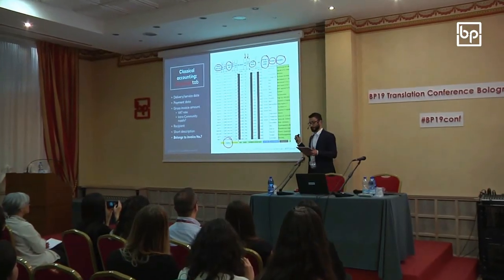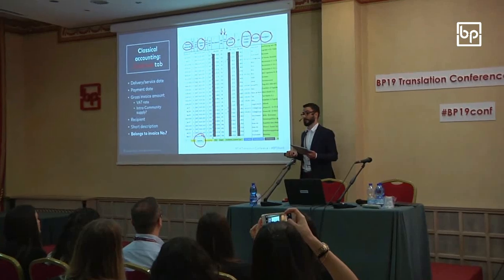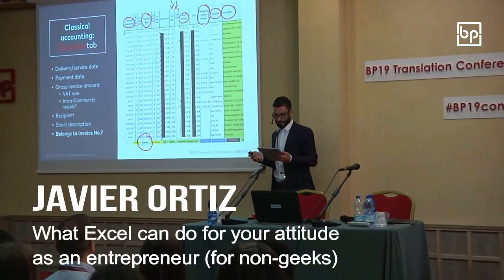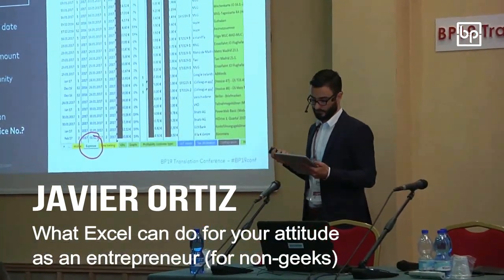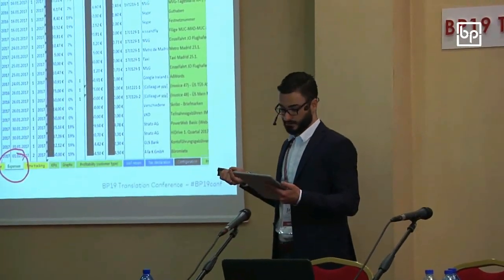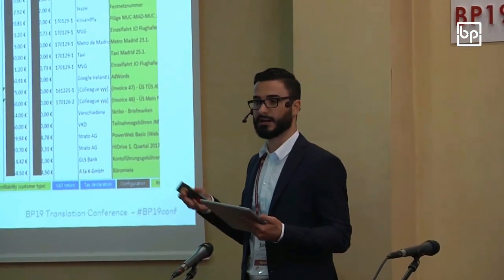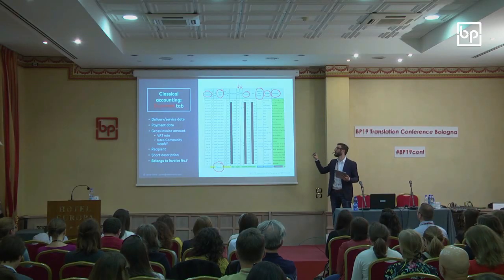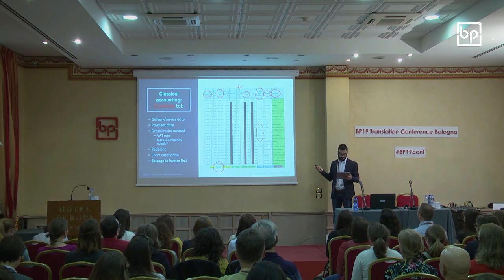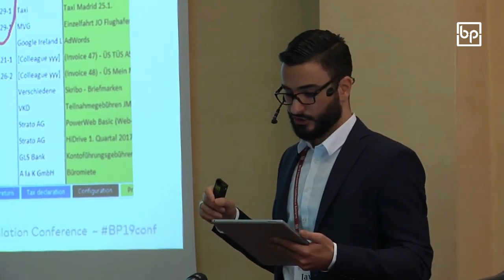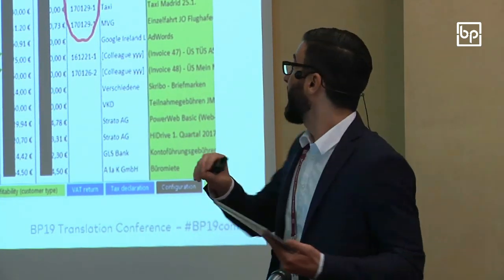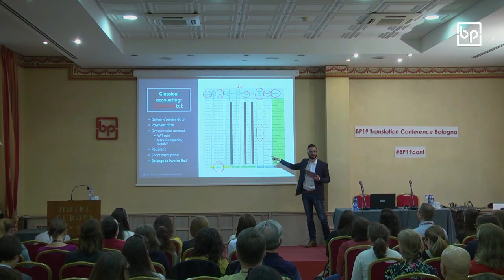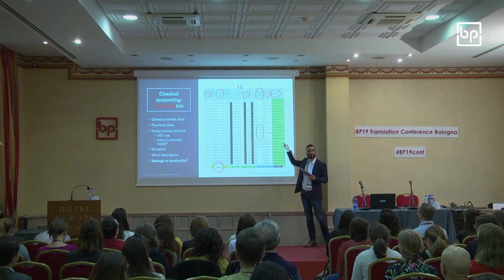This is what allows us to calculate how much we actually earn with each job. If we have any expense which is related to a particular job — like rental costs for interpreting booths or tour guide systems — we add the invoice number here. Then in the income tab, I programmed a formula which takes the net invoice amount of a particular job and subtracts any net amount in the expenses tab which has the same invoice number.